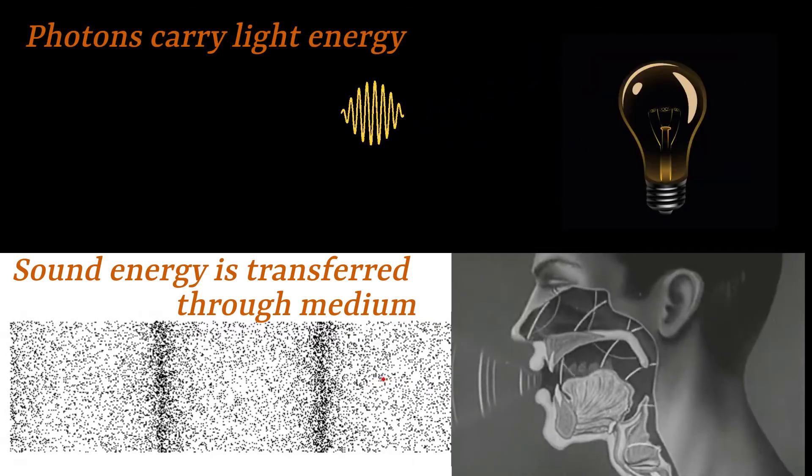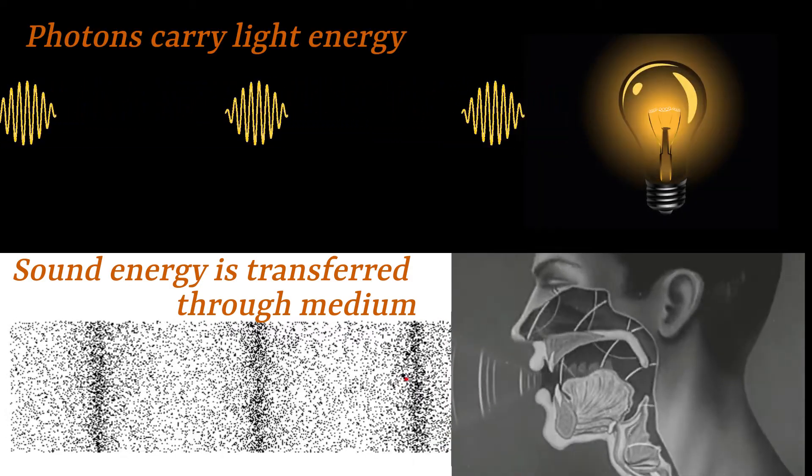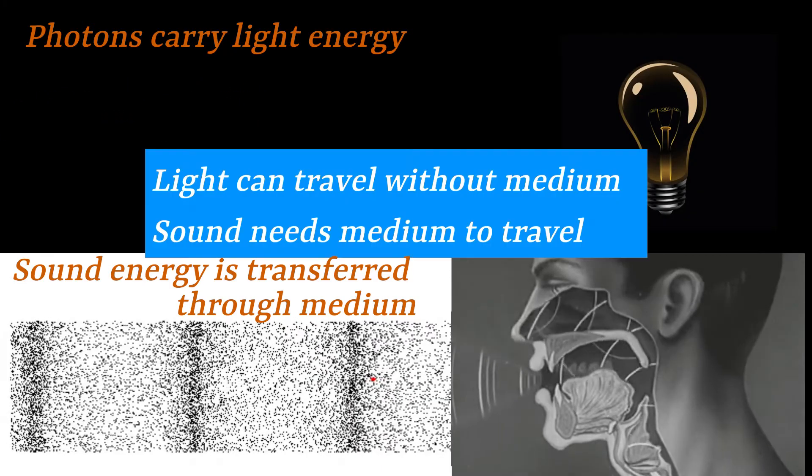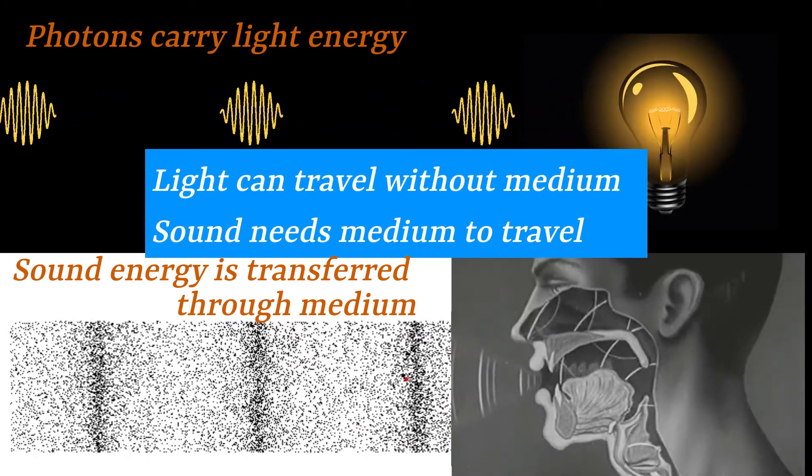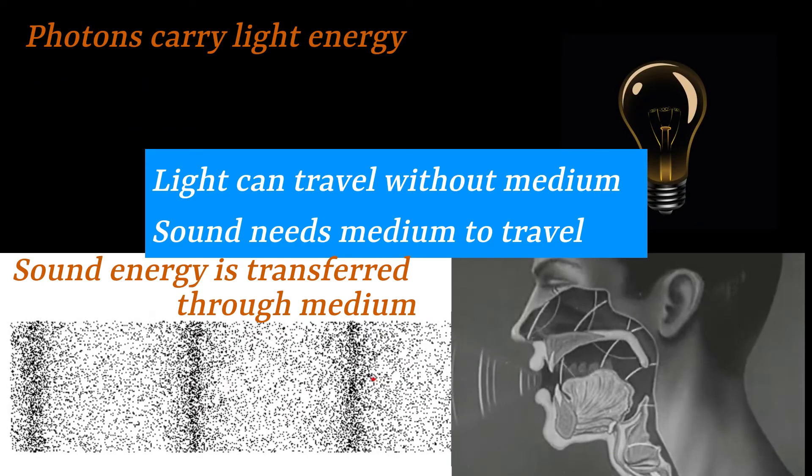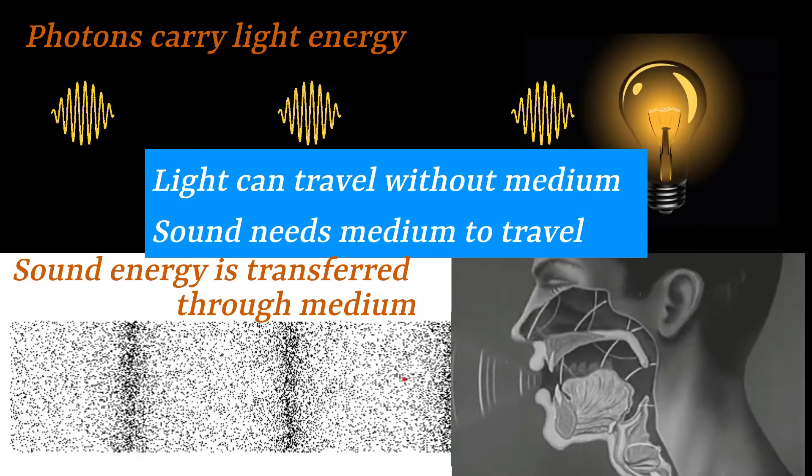Whereas in the case of light, photons which are emitted by a light source carry light energy from one place to other. This also suggests that some waves require a medium to travel from one point to another, whereas others can travel without any medium.